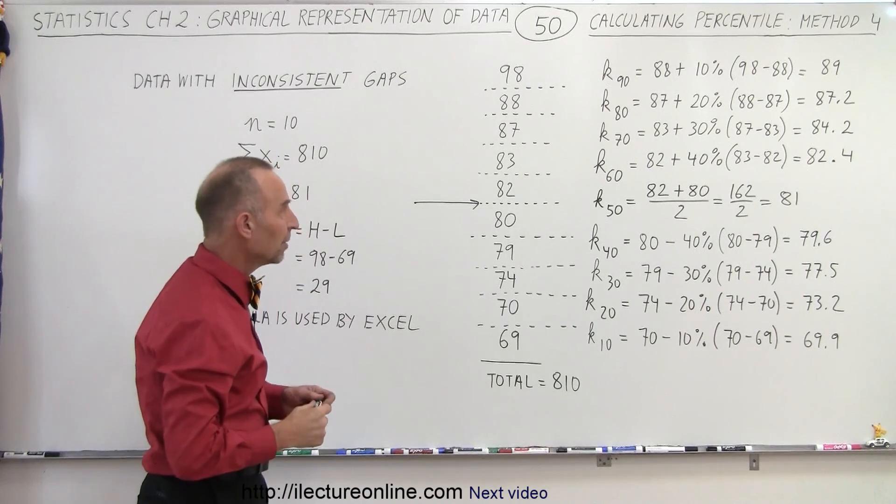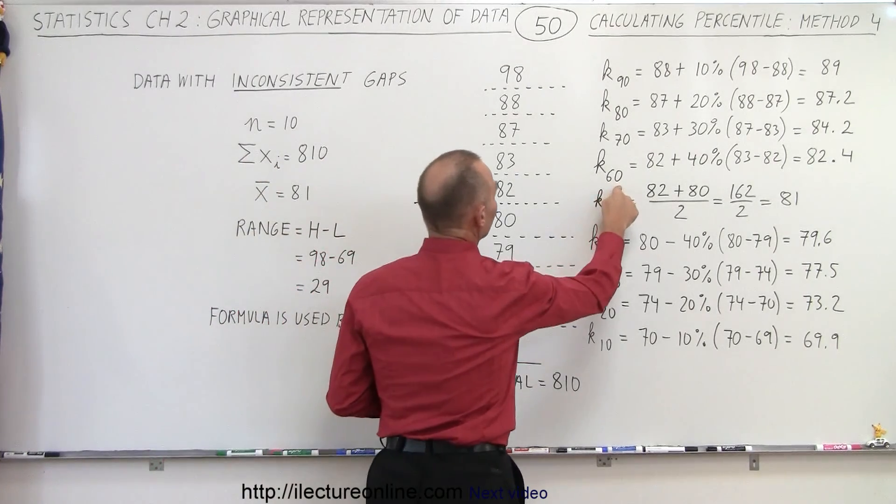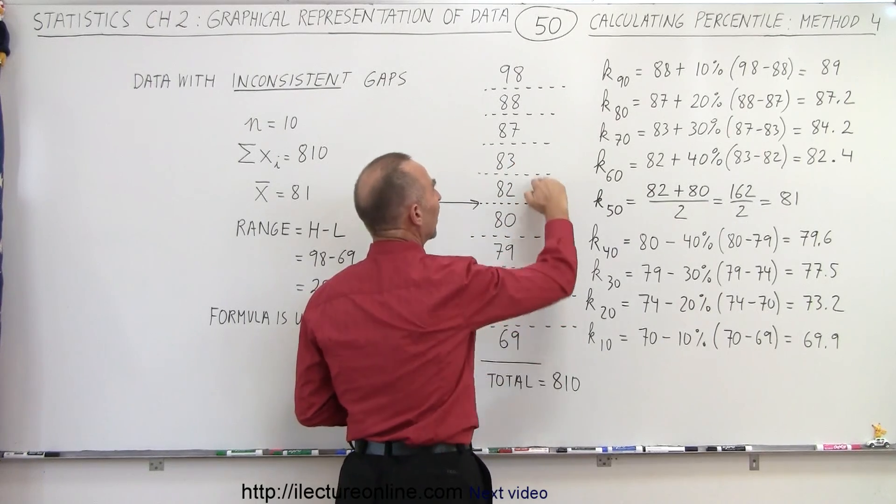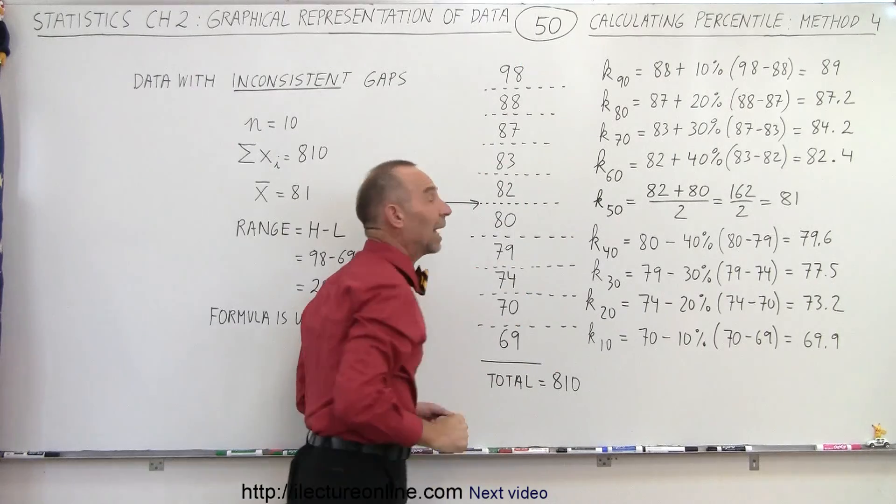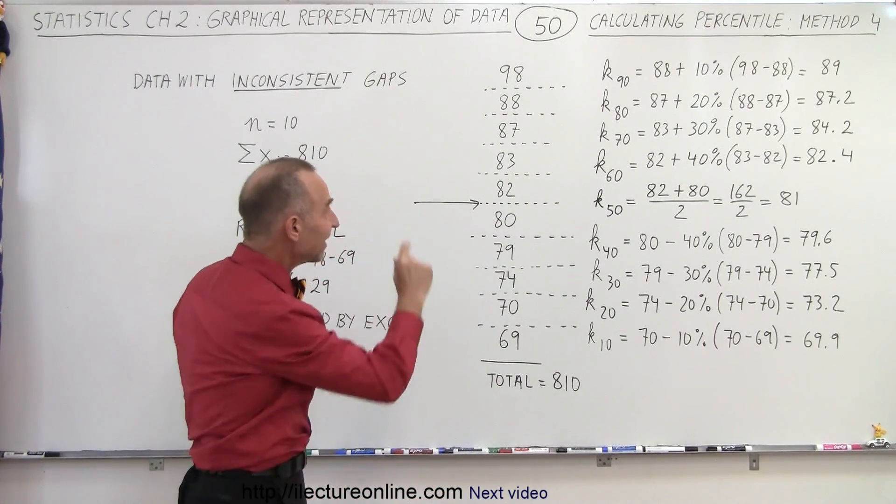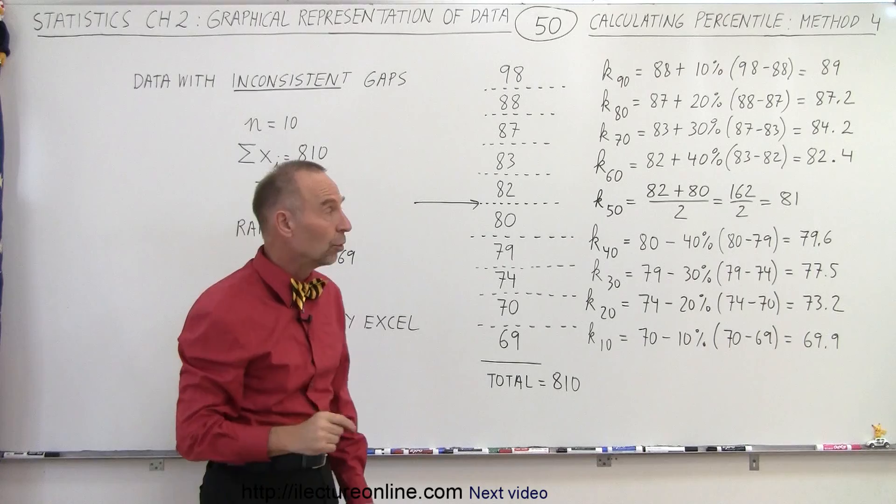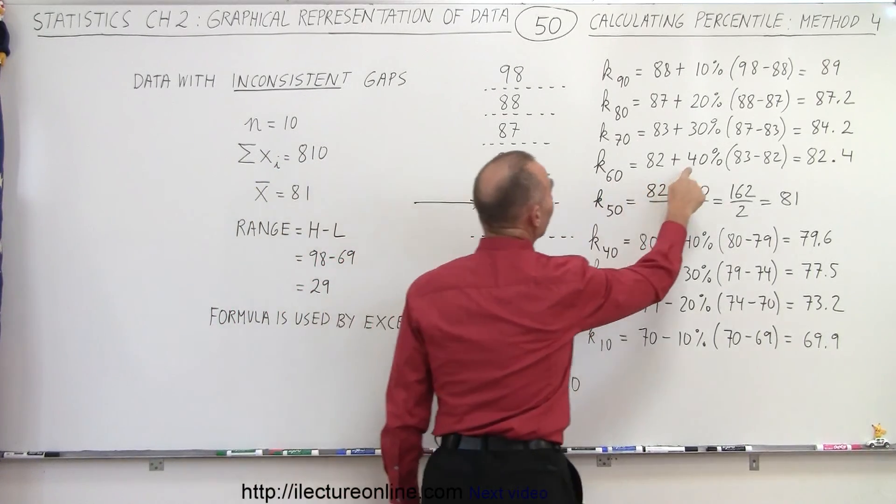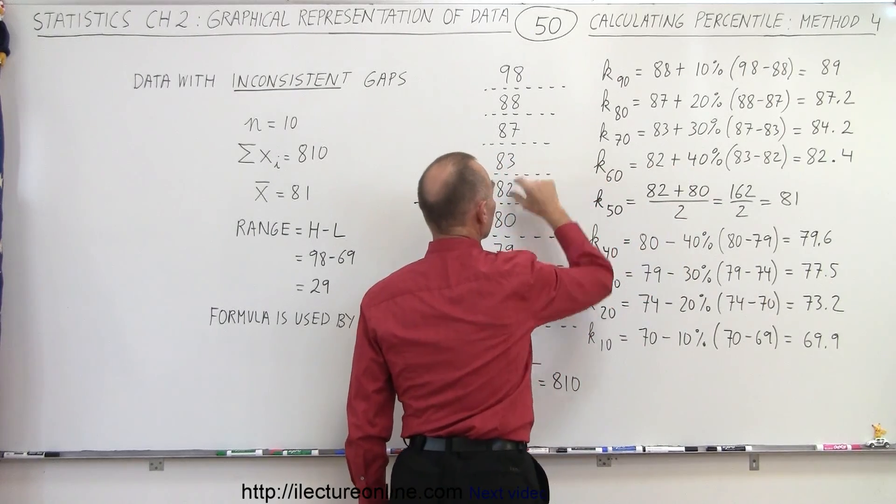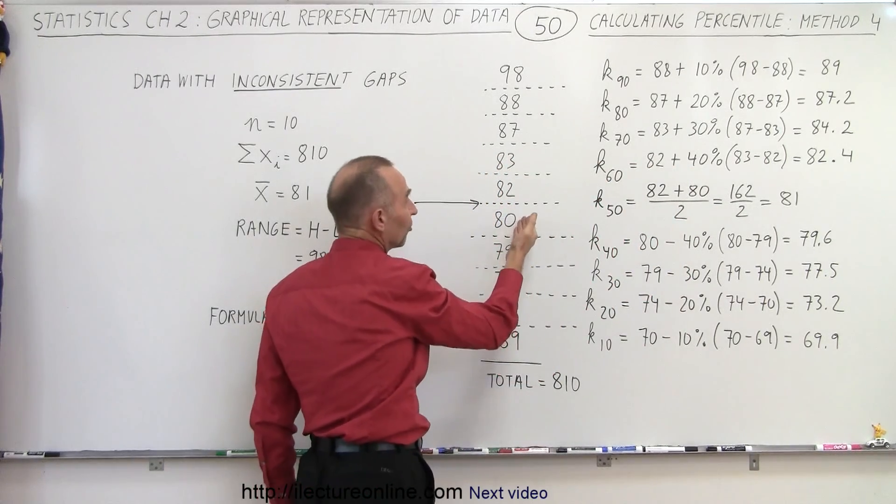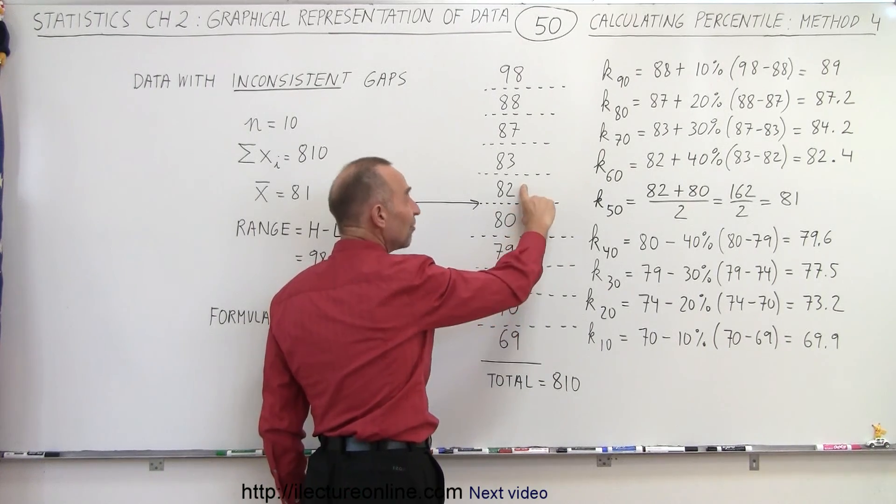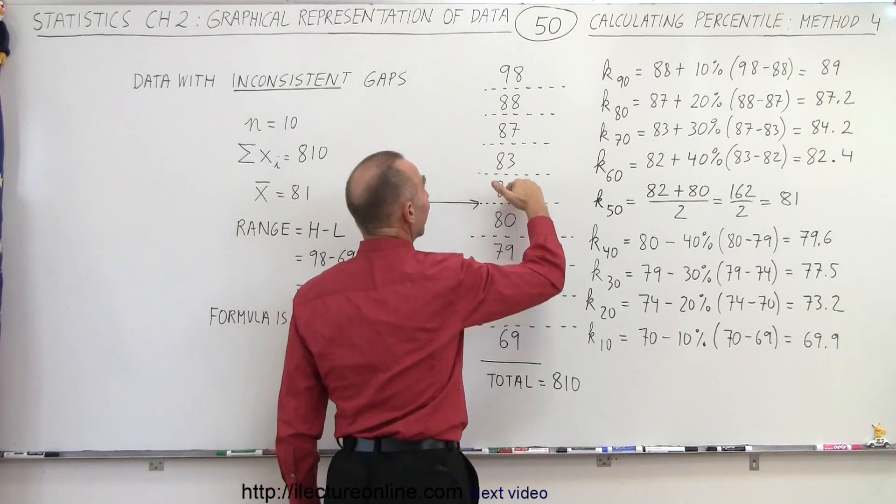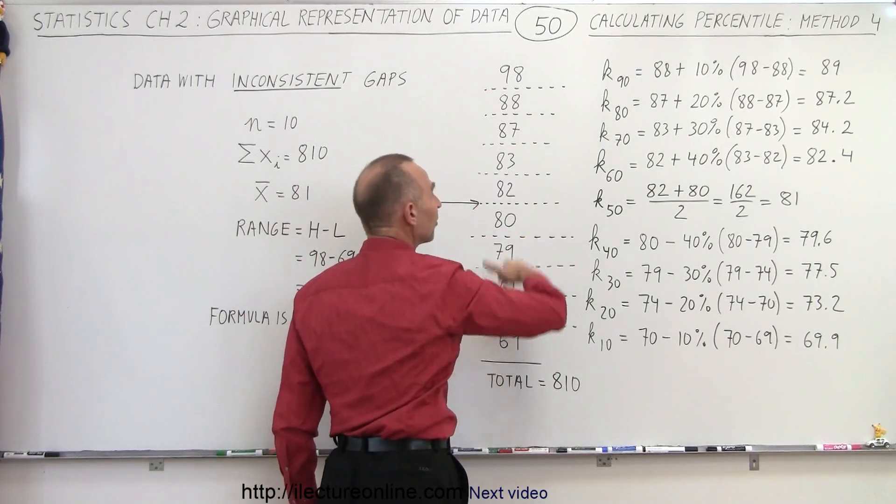But now what do we do when we go to the 60th percentile that would be in this boundary right here, because we have 60% of the data that have a smaller value and 40% of the data that has a larger value. What we don't do there is take the average between those two. What we do instead is we take the lower of the two values and add 40% of the difference. In this case, essentially what we're doing here is we're taking this value and taking 50% of the difference. That gives you the exact average, but we no longer calculate the exact averages when we go away from the 50th percentile.